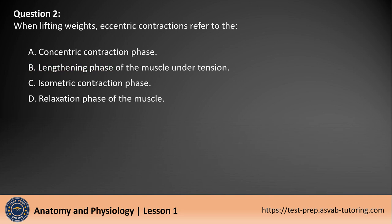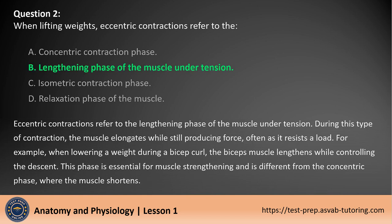Question 2. When lifting weights, eccentric contractions refer to the lengthening phase of the muscle under tension. During this type of contraction, the muscle elongates while still producing force, often as it resists a load. For example, when lowering a weight during a bicep curl, the bicep muscle lengthens while controlling the descent. This phase is essential for muscle strengthening and is different from the concentric phase where the muscle shortens.